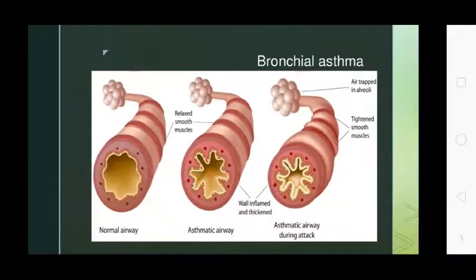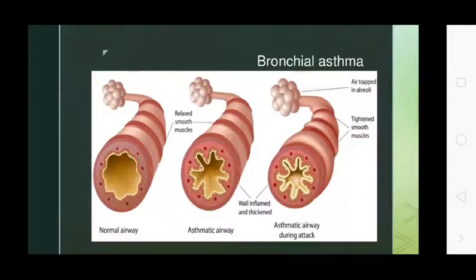Looking at the diagrams: the first diagram shows normal airway conditions, and the second shows the asthmatic airway. In the asthmatic airway, the wall becomes inflamed and thickened. During an asthmatic attack, the airway changes further.